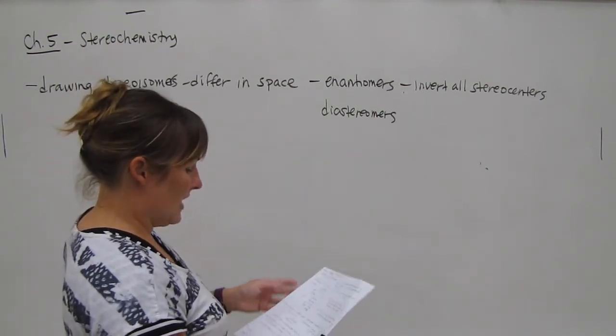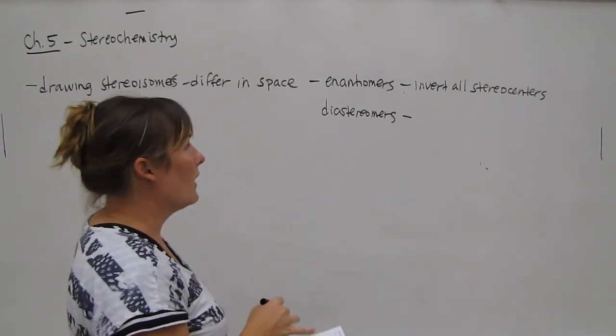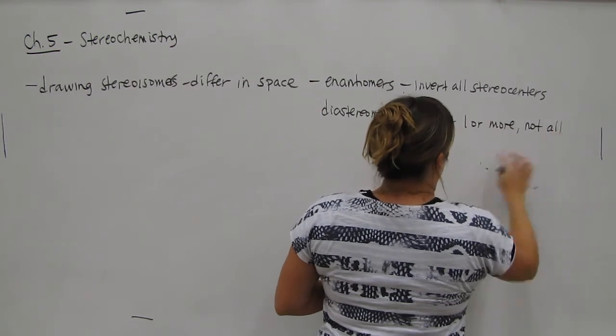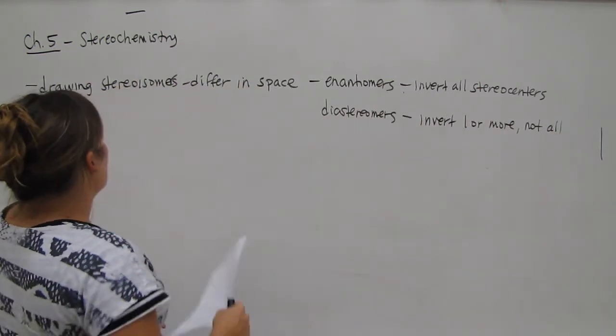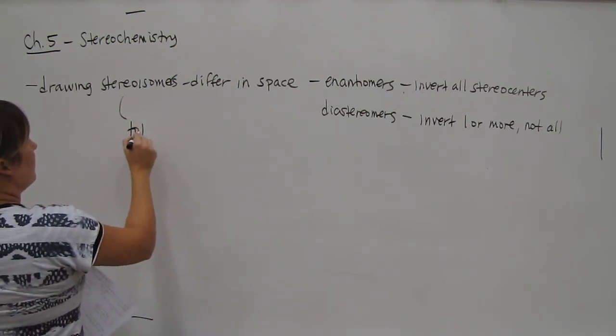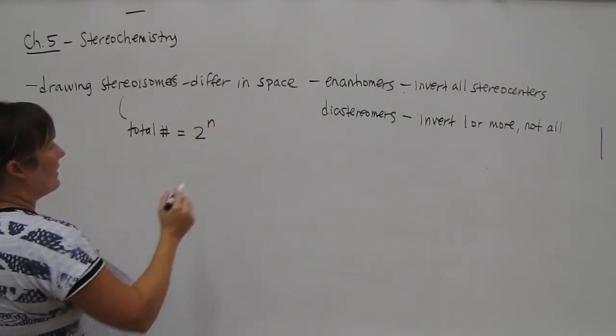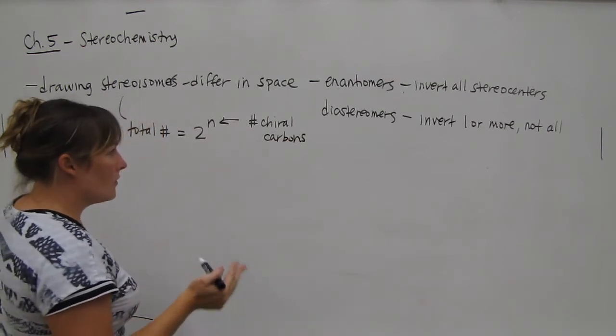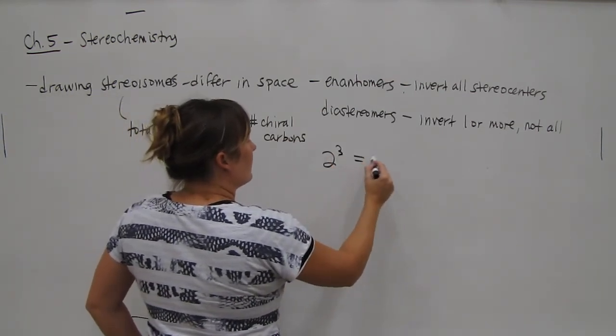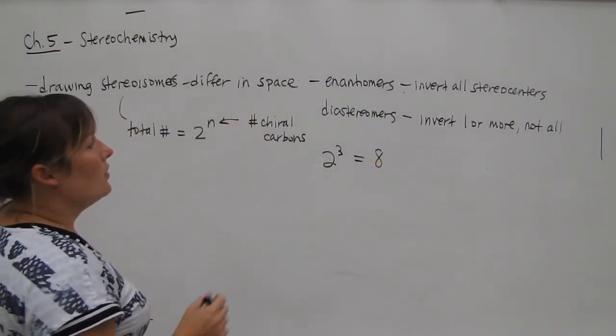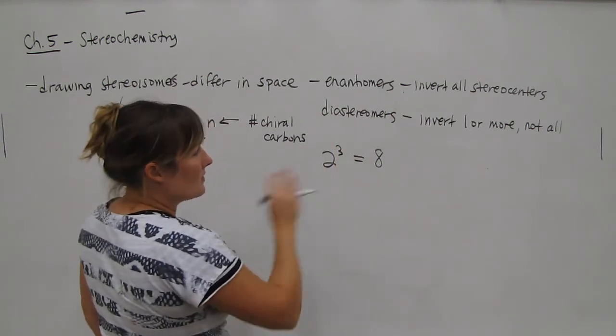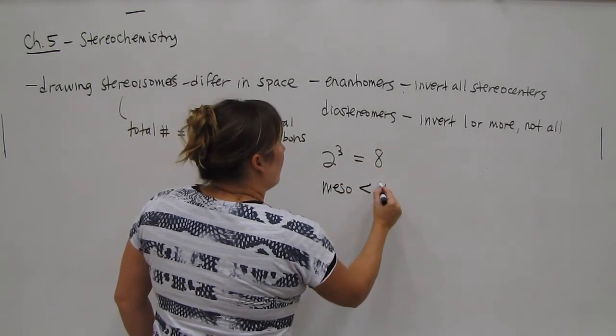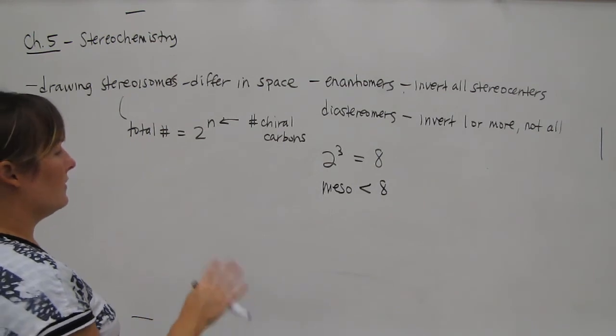And for diastereomers, you invert one or more, but not all. We learned also in this section that to know how many stereoisomers to draw, the total number equals 2 to the N, where N is the number of chiral carbons. So if you had 3 chiral carbons in your molecule, you can have 2 to the 3 or 8 possible stereoisomers. You should be able to draw them and tell whether each are enantiomers or diastereomers in relationship to each other. And remember that if you have meso as a possibility, it's always going to be less than this. So meso will be less than 8, but you don't know the number until you take the time to draw them.